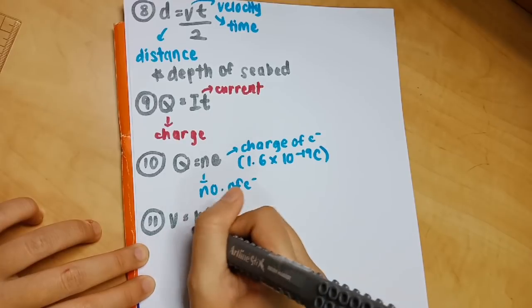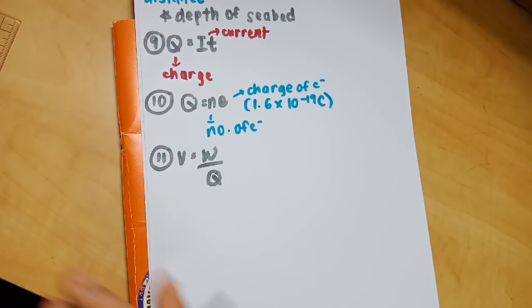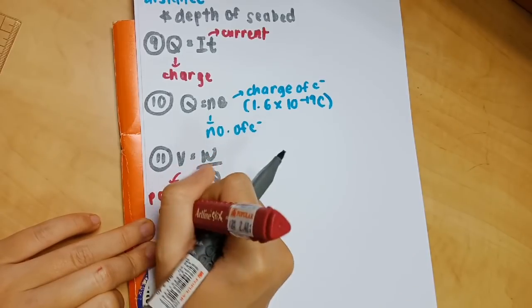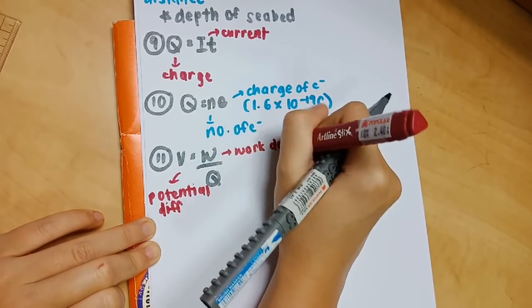Number 11: v equals w over q. V refers to the potential difference, w refers to work done, and q refers to the charge.